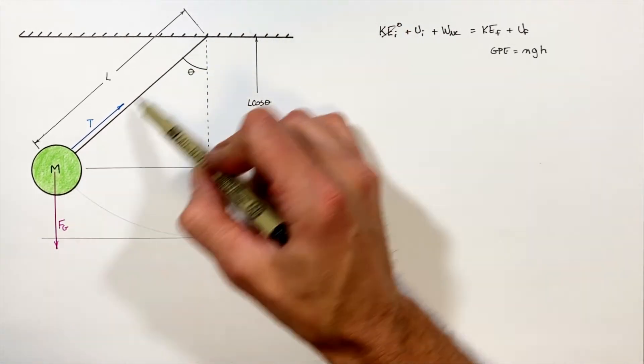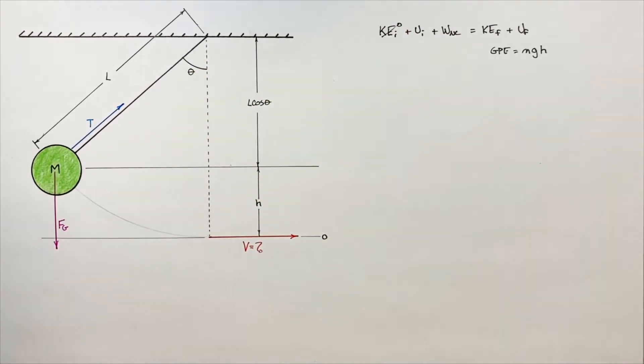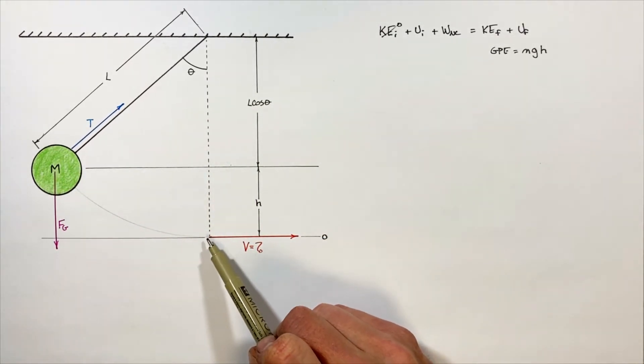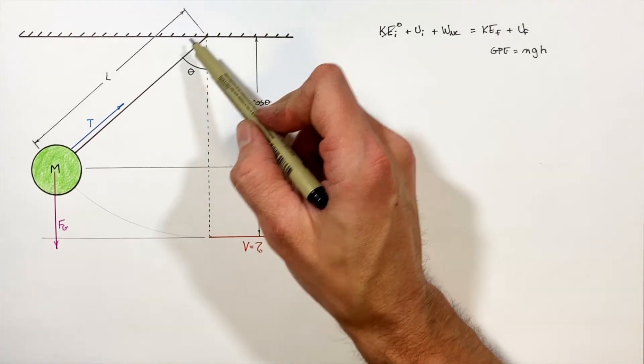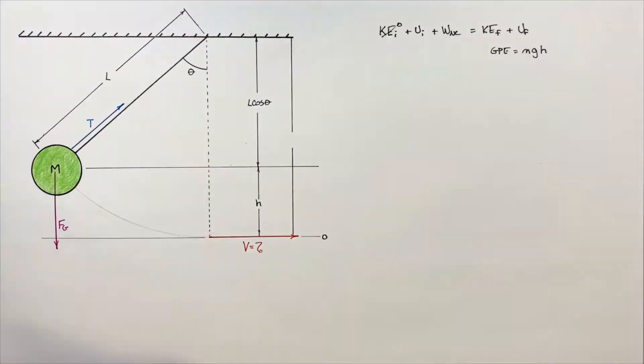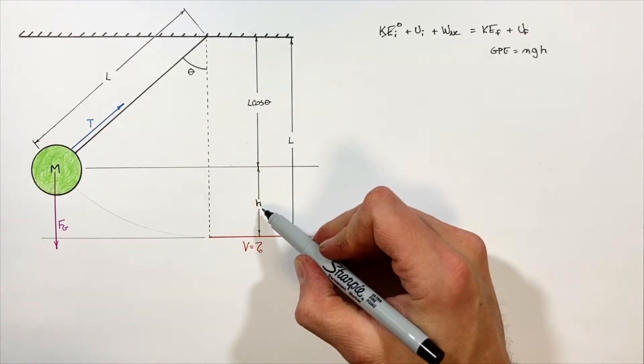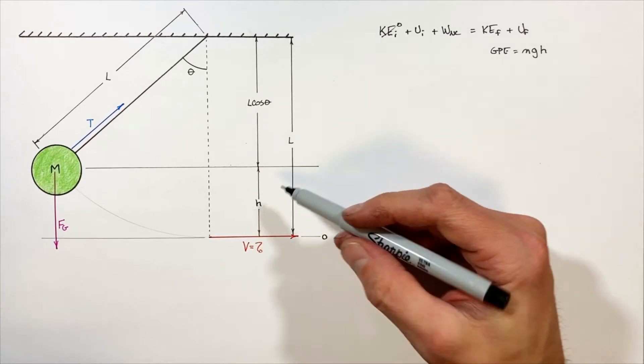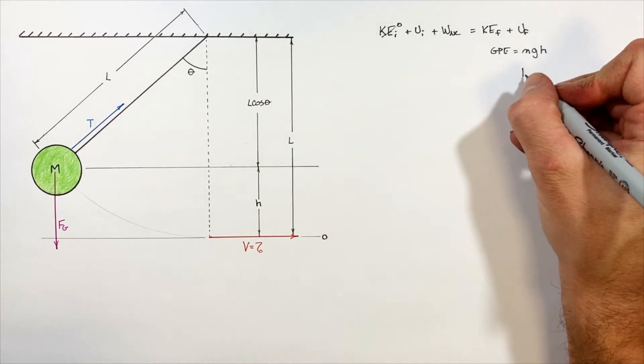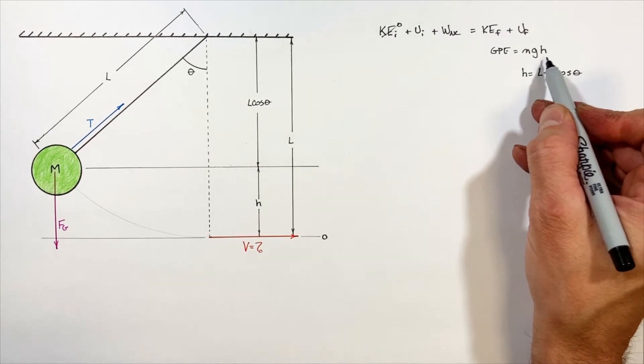When this mass swings all the way down so that it's hanging straight downward, it is going to be some distance L beneath the ceiling. If we want to solve for H, we simply need to take the difference between L and L cosine theta. Plugging this value in for H, we get our term for the initial gravitational potential energy.